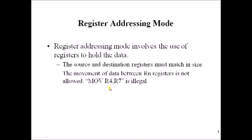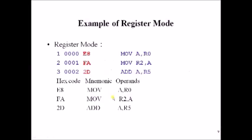We cannot use the banked registers as both source and destination at the same time. Examples: MOV A, R0 copies the content of R0 into accumulator A. MOV R2, A copies the content of A into R2 register. ADD A, R5 performs addition between A and R5, and the result is stored back in A.